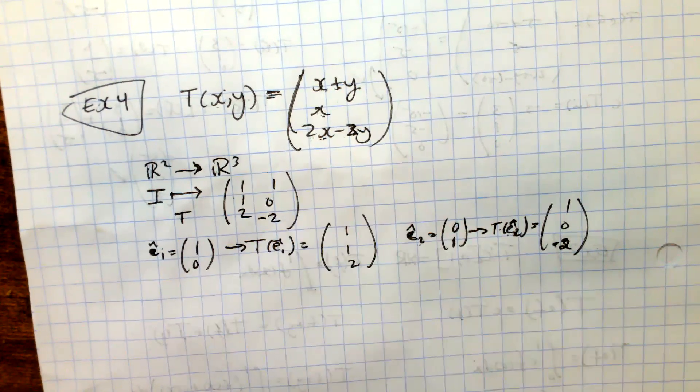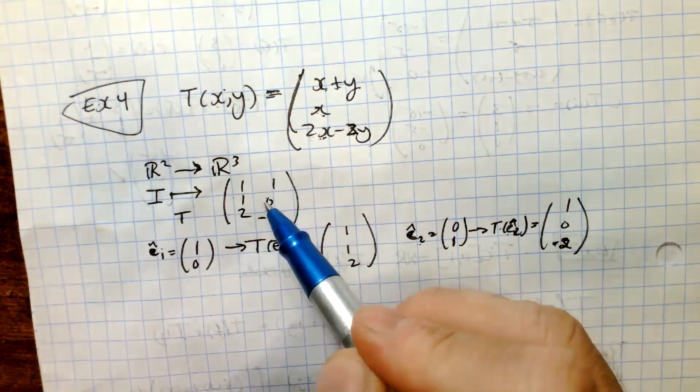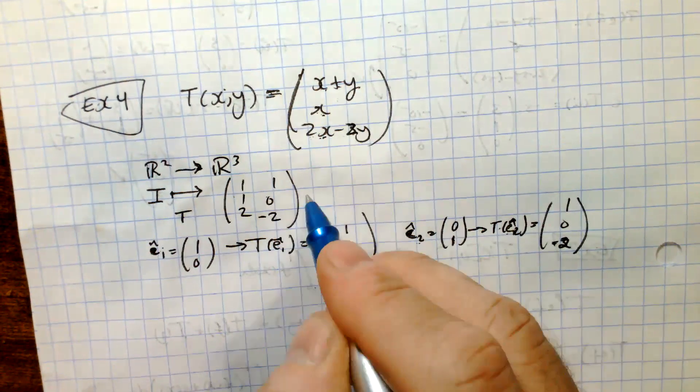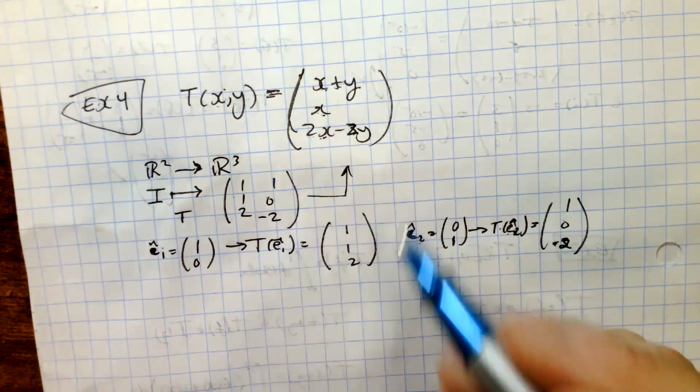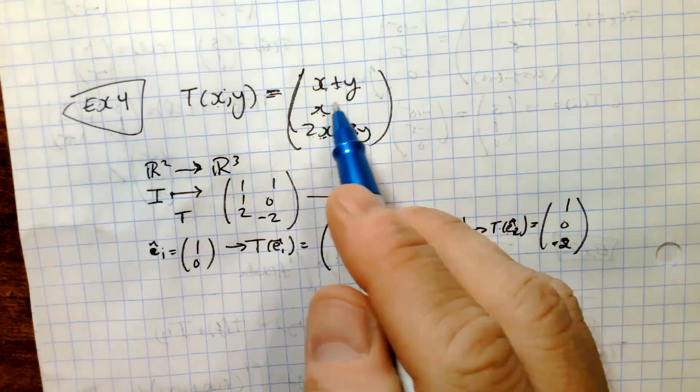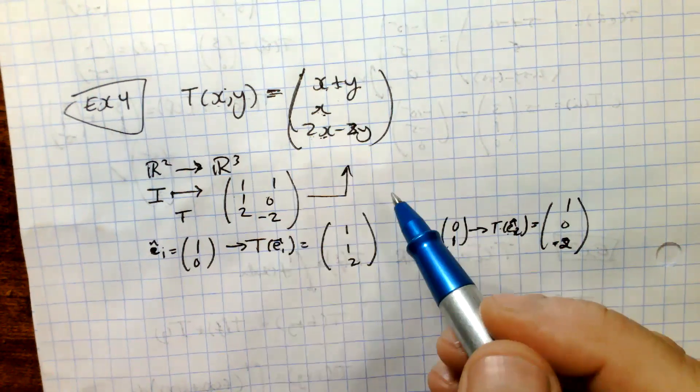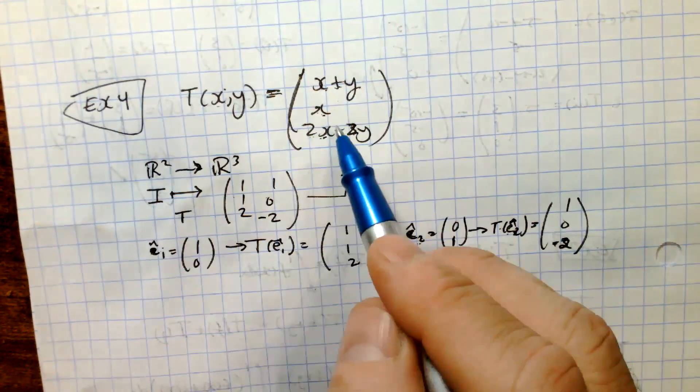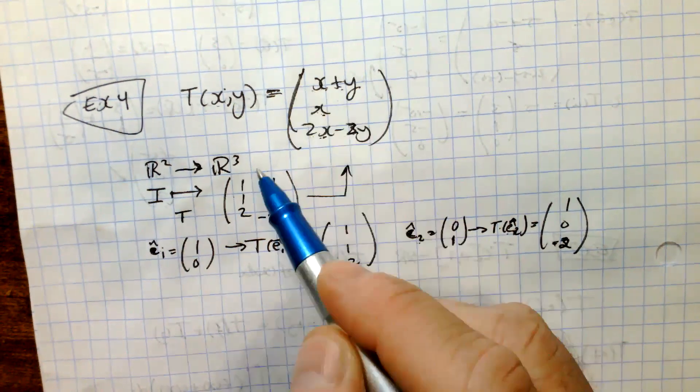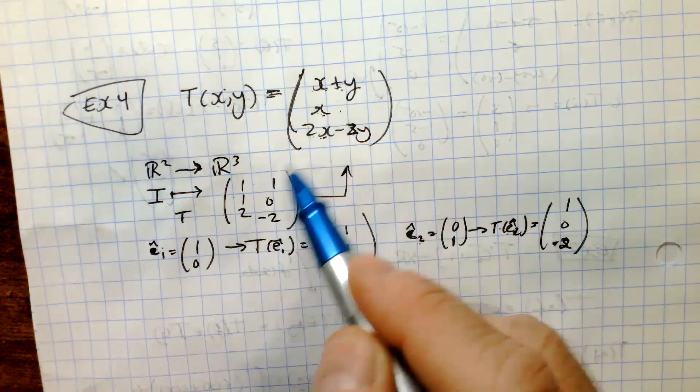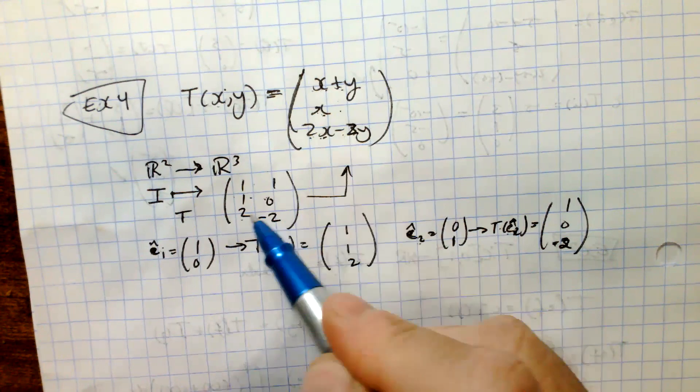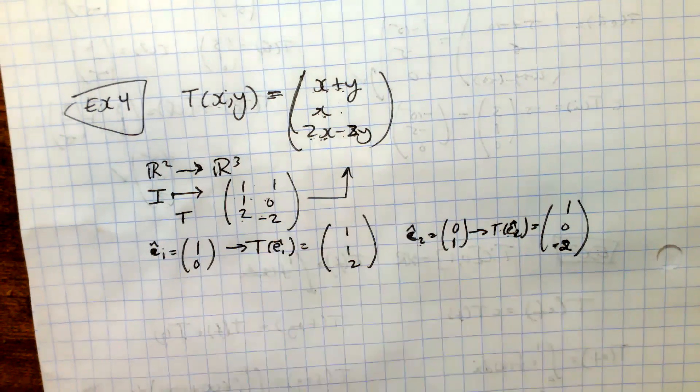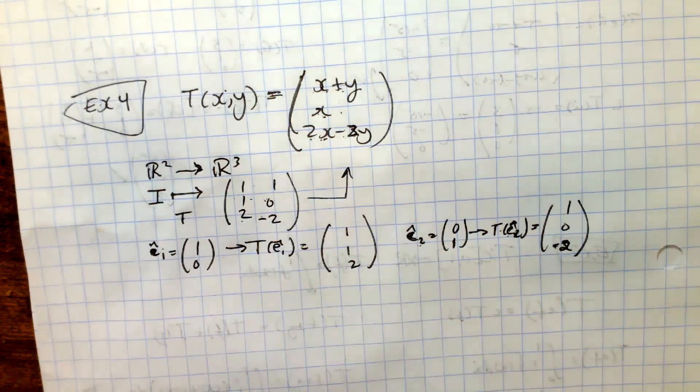Which, if you are paying attention, that should look very familiar, as it is very similar to what we would have expected, looking at the coefficients of the transformation defined. You have 1 and 1 here, 1 and 1, 1 and 0, 1 and 0, and 2 and negative 2, 2 and negative 2. So that's a good indication that you have the correct format.